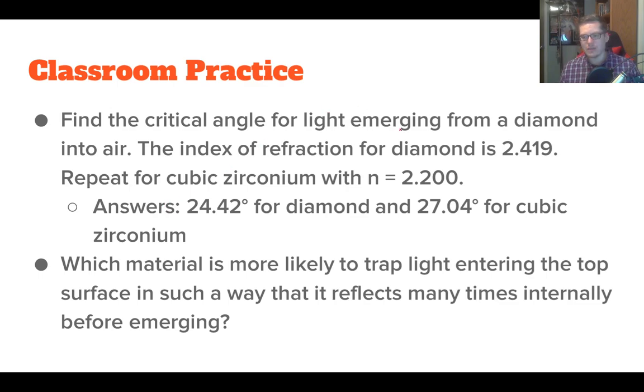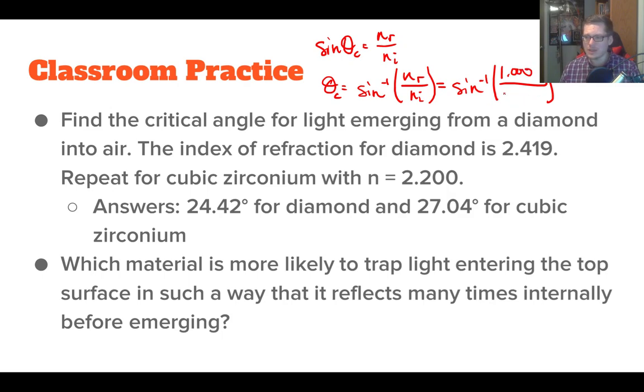Find the critical angle for light emerging from a diamond into air. The index of refraction for diamond is 2.419. Repeat for cubic zirconium. We just said that sine of the critical angle equals nr over ni. So our critical angle would be equal to the inverse sine of nr over ni. For diamond, we'd take it's going into air, so this is essentially 1.000, and then 2.419 for the diamond. If we plug that in, we should get 24.42.